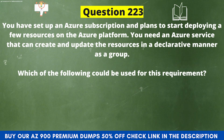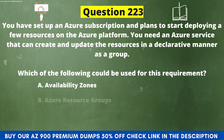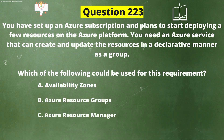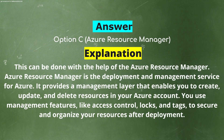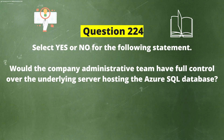Next question: You have an Azure subscription and need an Azure service that can create and update resources in a declarative manner as a group. Which of the following could be used? Option A: Availability Zones. Option B: Azure Resource Groups. Option C: Azure Resource Manager. Option D: Azure Regions. The correct answer is Option C, Azure Resource Manager. Azure Resource Manager is the deployment and management service for Azure. It provides a management layer that enables you to create, update, and delete resources in your Azure account, and use features like access control, logs, and tags to secure and organize your resources.